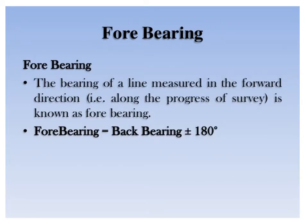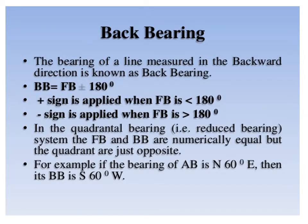The bearing of a line measured in the forward direction along the progress of survey is known as forward bearing. The relation between forward bearing and back bearing is: forward bearing equals back bearing plus or minus 180 degrees. The back bearing equals forward bearing plus or minus 180 degrees. The plus sign is used when forward bearing is less than 180 degrees, whereas the minus sign is used when forward bearing is greater than 180 degrees. In the quadrantal bearing system, the forward bearing and back bearing are numerically equal but the quadrants are just opposite. For example, if the bearing of AB is N 60 degrees east, then its back bearing is S 60 degrees west.